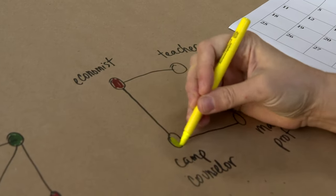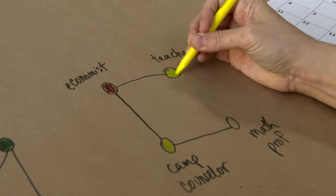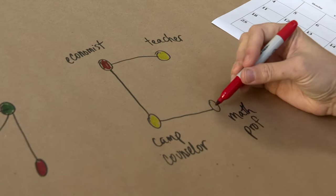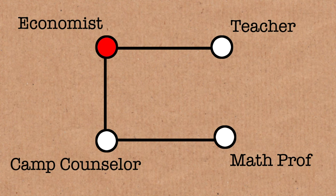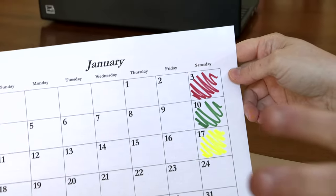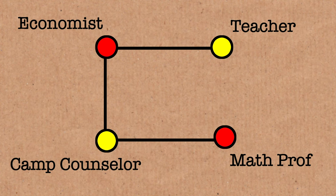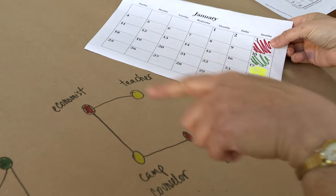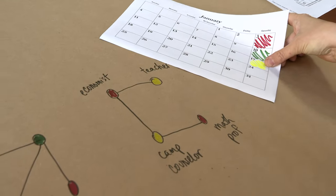Let's start by coloring the economist red. Then we have to make sure that these two vertices are not red because they're connected to the red one, but they're not connected to each other. So if I make the camp counselor yellow, there's no reason why I couldn't make the teacher yellow. And then the math professor can't be yellow because the math professor is connected to the camp counselor, but there's nothing stopping the math professor from being red. So we can color our graph with just two colors. I was endeavoring to use the smallest number of colors possible because now no one's coming over on green weekend — that means I can just loaf around in my pajamas the whole weekend. So on red weekend I'm going to invite the math professor and the economist, and on yellow weekend I'm going to invite the camp counselor and the teacher.